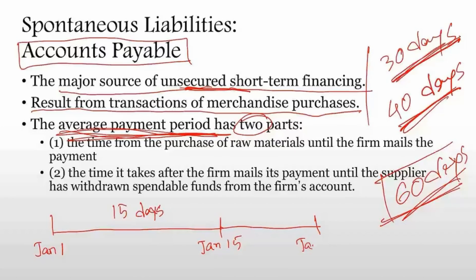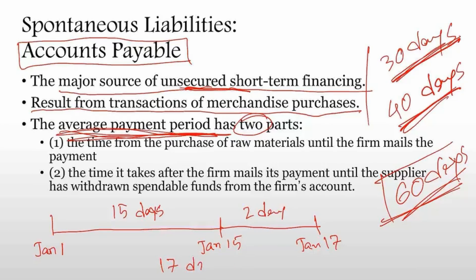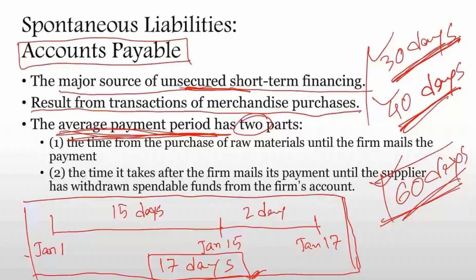The supplier cannot get the money right on January 15 — it will take some more days, say two days, until January 17, to collect the check. They will collect the check from the post office box or wherever it was sent, enter the information, process the check, submit it to their bank, and their bank will collect it from your bank. That whole process may take two to four days. So with two days, we have a total of 17 days of delay, which is the average payment period.